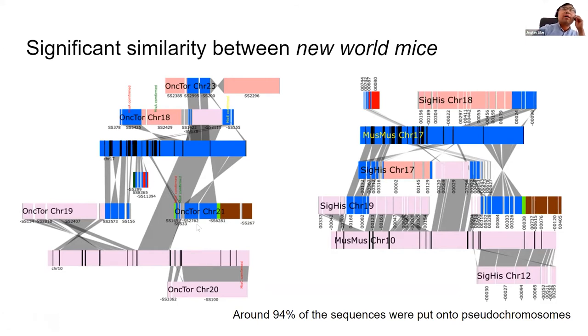Here you can see on grasshopper mouse, there's chromosome 21, which is a combination of house mouse 17 and house mouse 12 in this brown color. In the middle, there's a green band, which is chromosome 5. So very complex recombination, and this structure is observed again in the cotton rat in a single scaffold, which is probably true. This has further confirmed that these two New World mice have very similar genome structure.